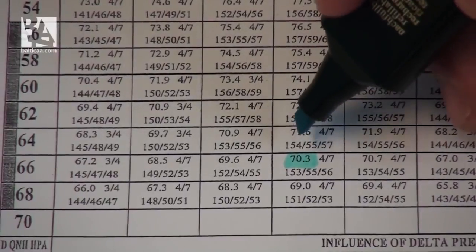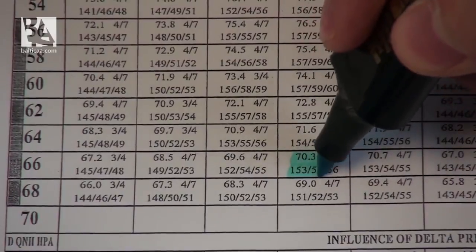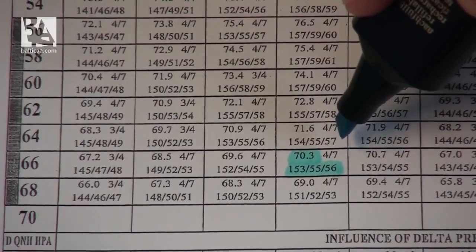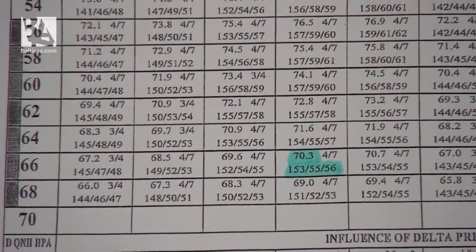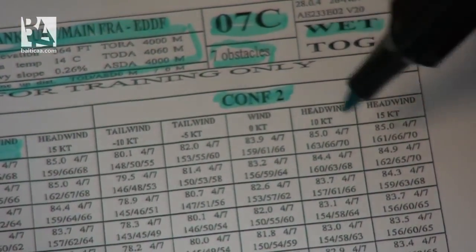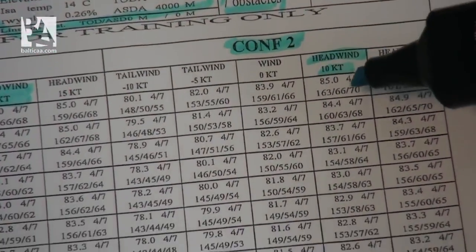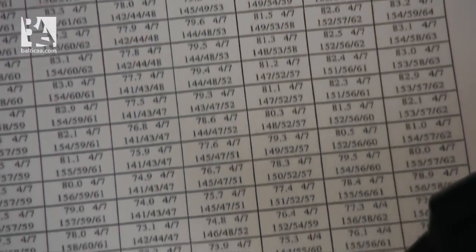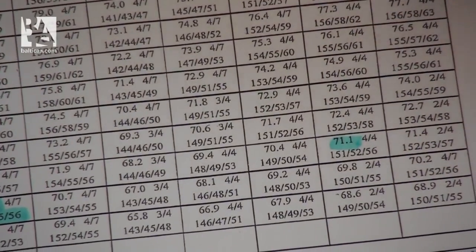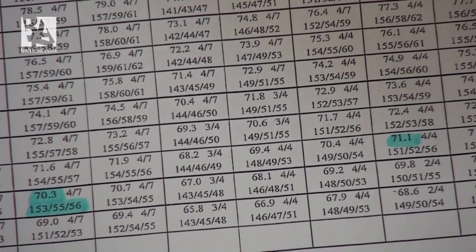At 70.3 tons we can read off that our V speeds are 153, 155, and 156 knots. We could also check them in the configuration 2 table on the right, searching for a headwind of 10 knots and a weight of 70 tons — going all the way down, the closest we can use is 71.1. This is generally just to compare the speeds and see which flap setting is better for takeoff.